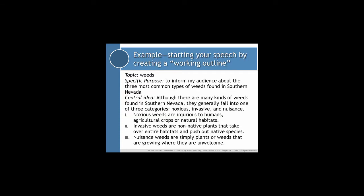Here's an example. I call this a working outline — this is not a complete sentence outline by any means, but it's a starting point for putting together and going into detail on what your speech is going to be about. For instance, I've moved to the topic of weeds. If that's my topic, then my specific purpose statement might be to inform my audience about the three most common types of weeds found in Southern Nevada. Unless I really know my weeds, I probably wouldn't be able to come up with a central idea or main points once I figured out my specific purpose statement.